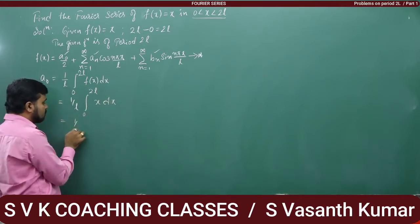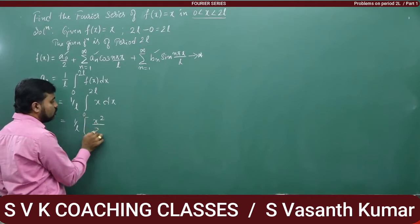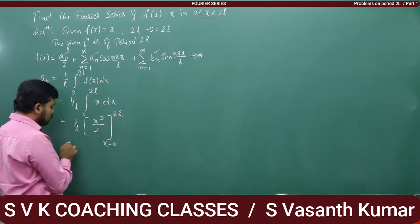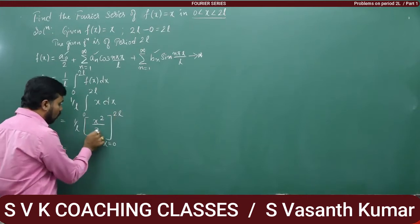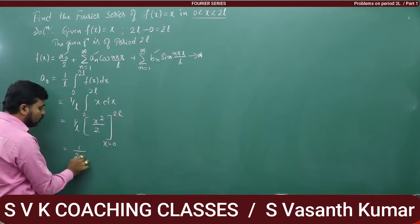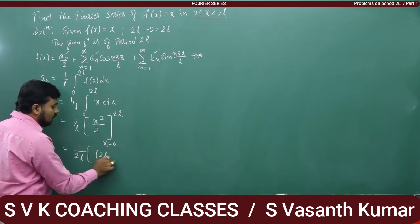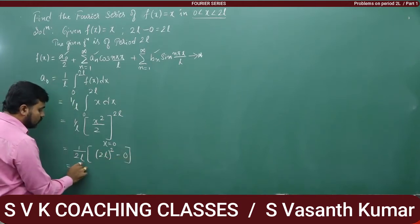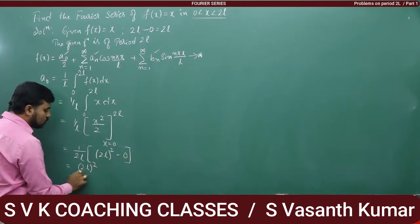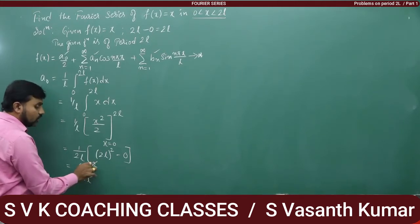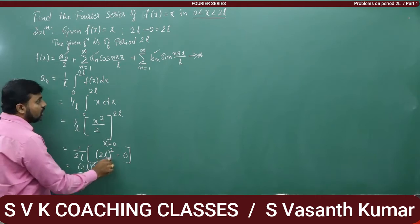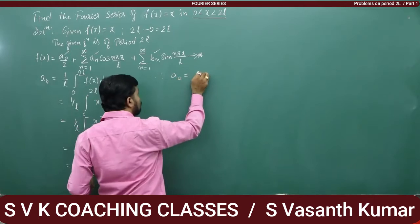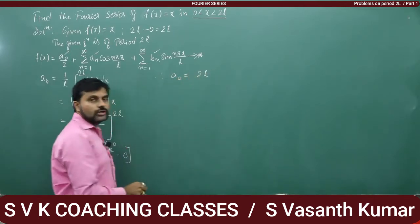Integral of x is x²/2, with limit x = 0 to 2L. Taking out (1/2L): substitute the upper limit (2L)² minus lower limit 0² = 0. You are left with (2L)² divided by 2L. One term of 2L gets cancelled. Therefore, a₀ = 2L.